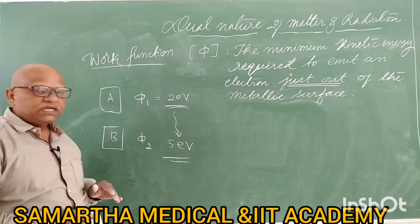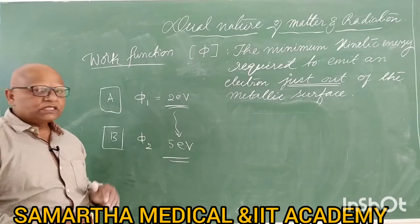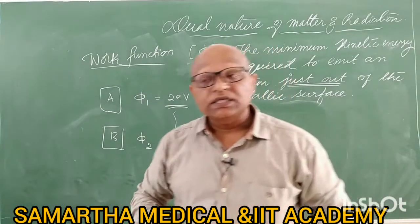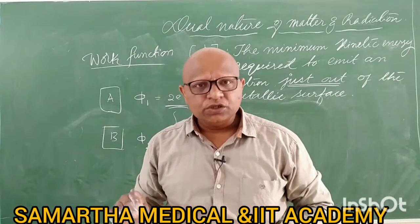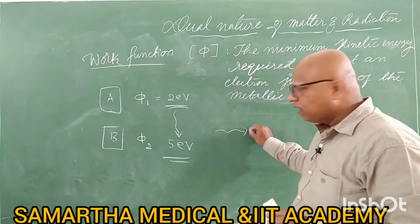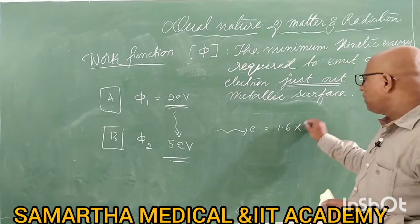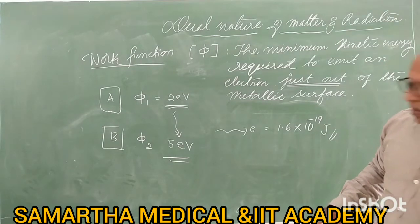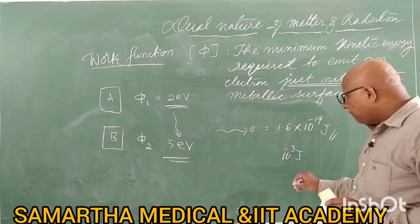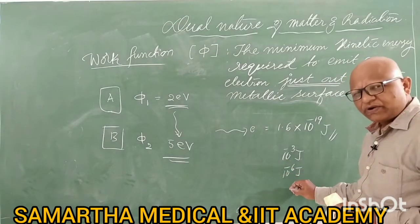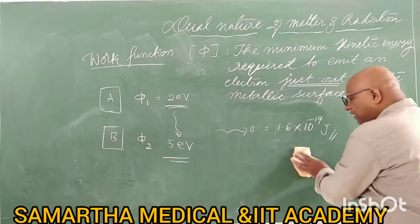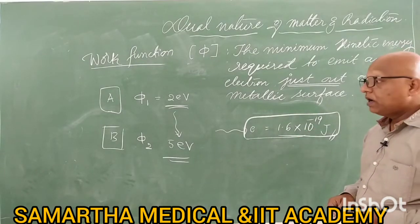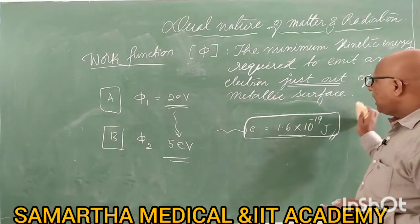Electron energies are measured in electron volts. Energy is to be measured in joules, but electronic energies — the energies of electrons — are not measured in joules because the energies of electrons are so small; they are of the order of 1.6 × 10⁻¹⁹ joule. Values like 10⁻¹⁹ joule are highly difficult to understand and comprehend. That is why we use a different unit for that, which is called electron volt.